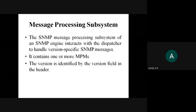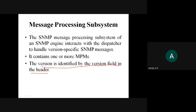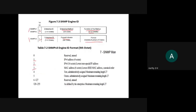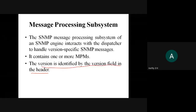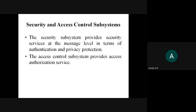The version of the SNMP message is identified by the version field in the header of the engine. If the value is 0 it indicates version 1 or 2, and if the value is 1 it indicates version 3. With this value, the processing unit can identify what kind of message it is receiving.